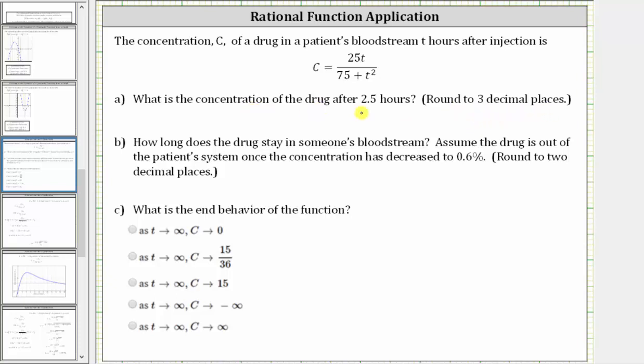They're telling us the time T in hours is 2.5. To find the concentration, we need to determine the value of C by substituting 2.5 for T. We're determining the function value C of 2.5. This is equal to 25 times 2.5 divided by the quantity 75 plus the square of 2.5.